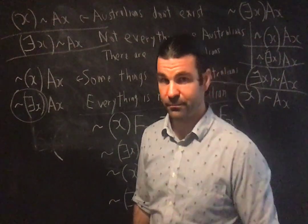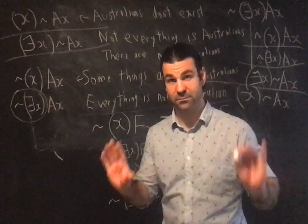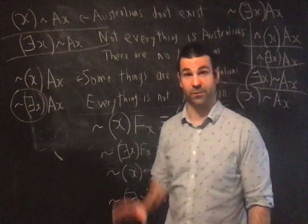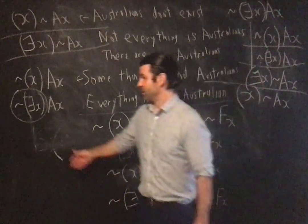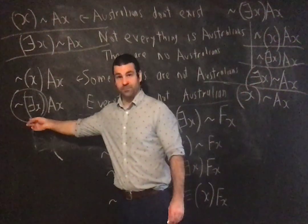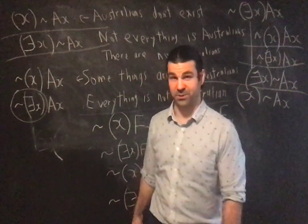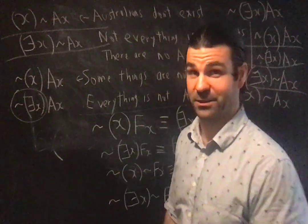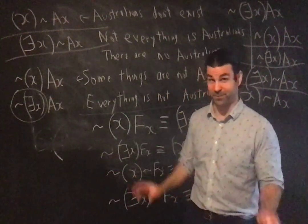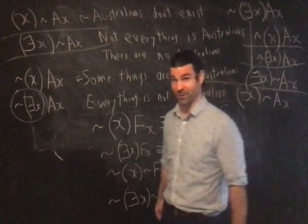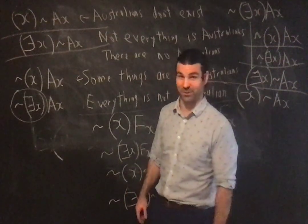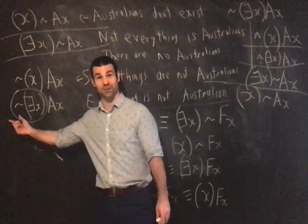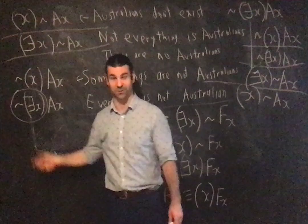That was the great discovery of what quantifiers could express. You see the exchange between Heidegger and Carnap at Davos. They were talking about the metaphysical significance of nothing, and Carnap thought we don't need to do metaphysics about nothing, because Frege had shown us that we can express nothing as the negation of the existential quantifier.